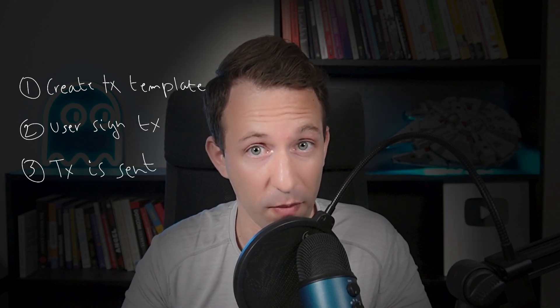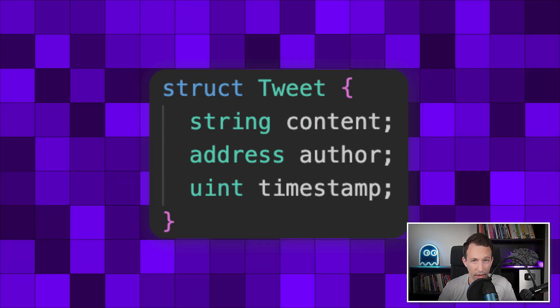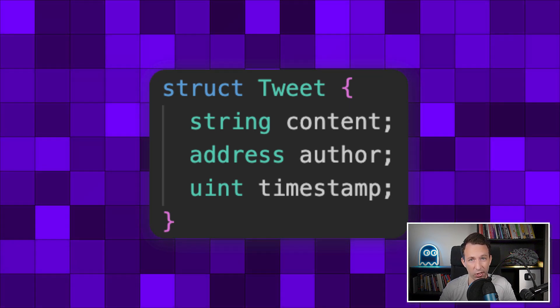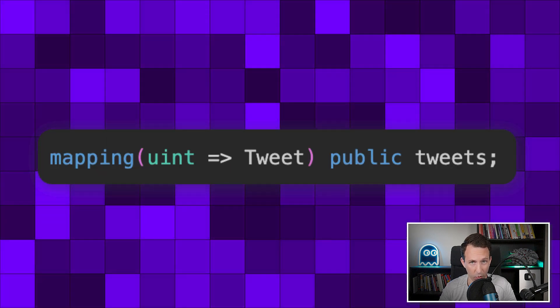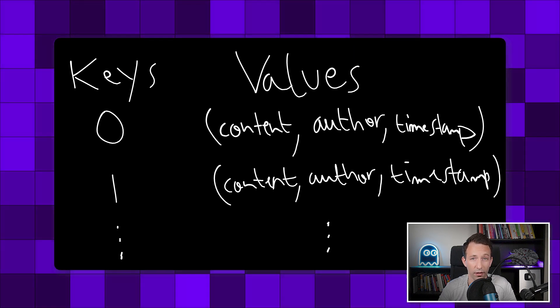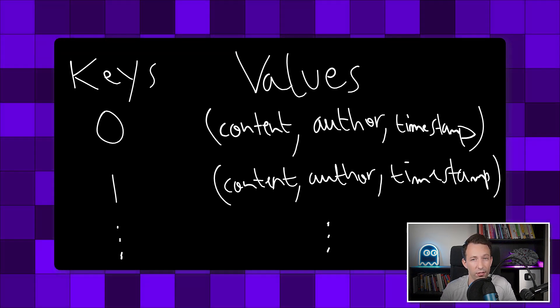But how can we do that? In our front-end, we're going to create a transaction template with the details of the tweet, and we're going to ask the user to sign this transaction with MetaMask. Once the user approves the transaction, it's going to be sent to the blockchain by MetaMask. In our smart contract, each tweet is represented by a data structure with different fields. To group all these tweets, we're going to need a mapping — a key-value store where the key is the ID of the tweet and the value is the tweet itself. We also have a function to create each tweet.